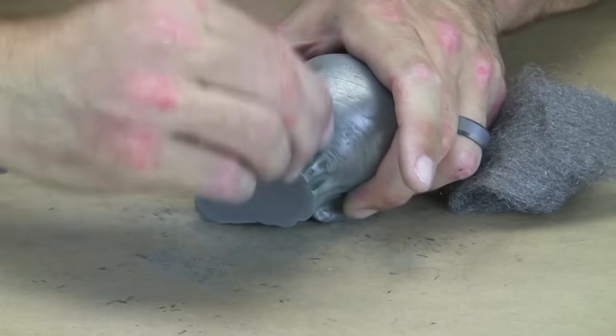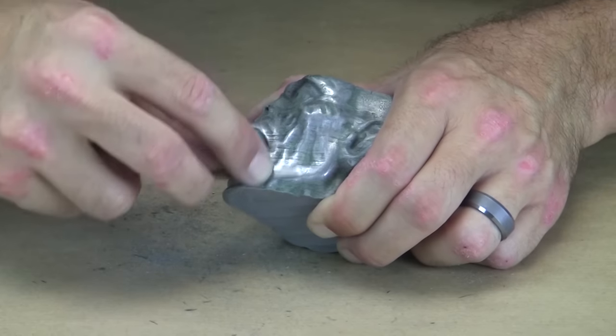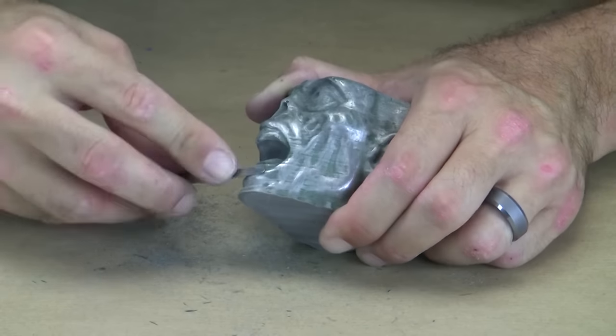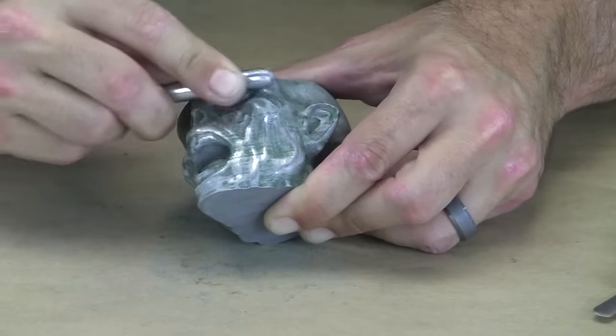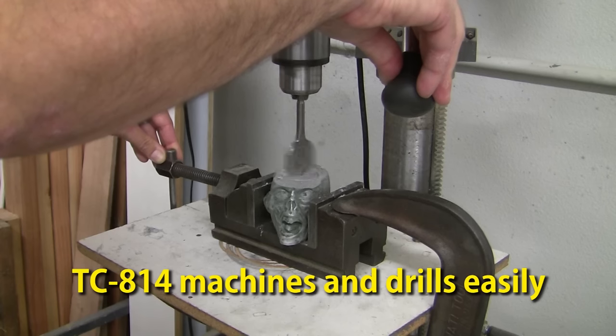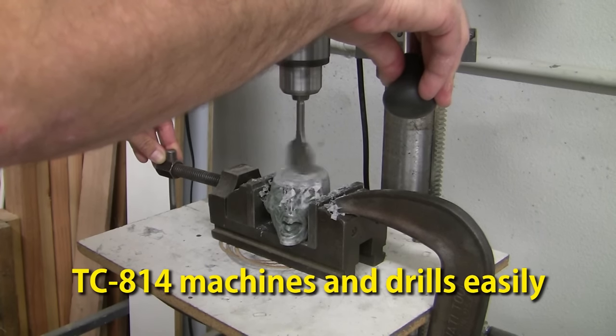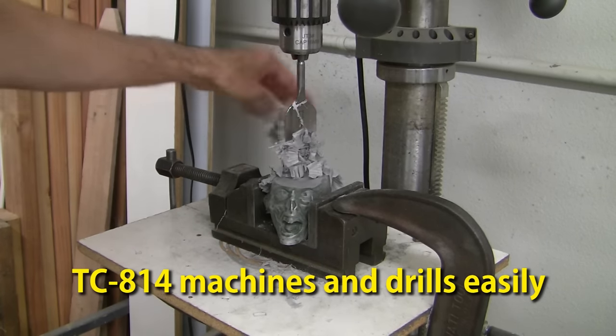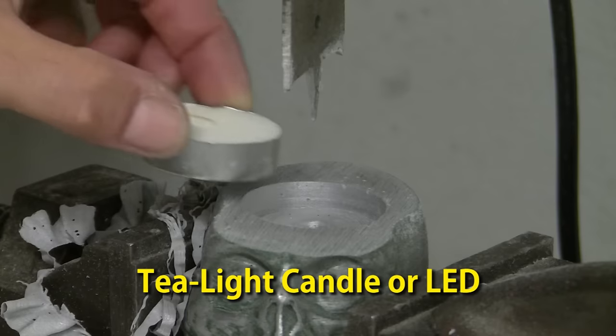Using sandpaper, steel wool, and burnishing tools will produce a very nice effect to the cast part. Because the TC814 machined so well, we'll simply drill a recessed pocket in the zombie's head for our tea light candle.